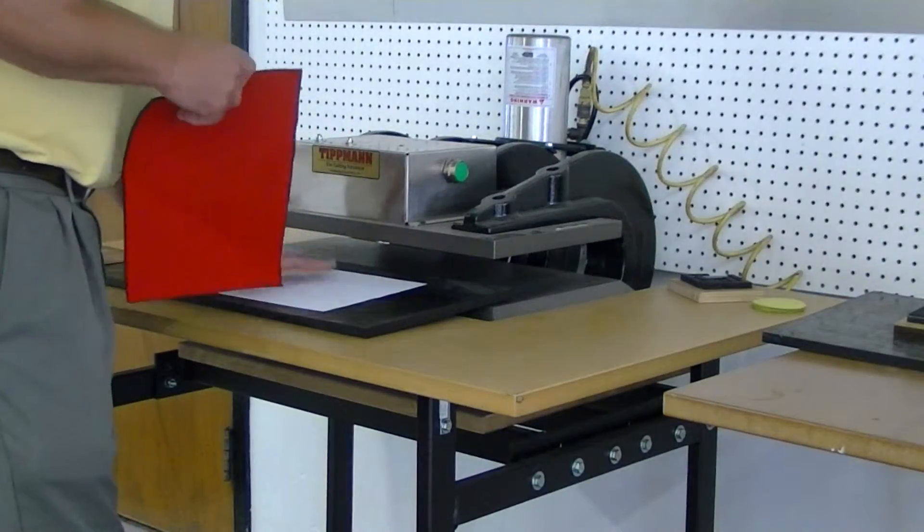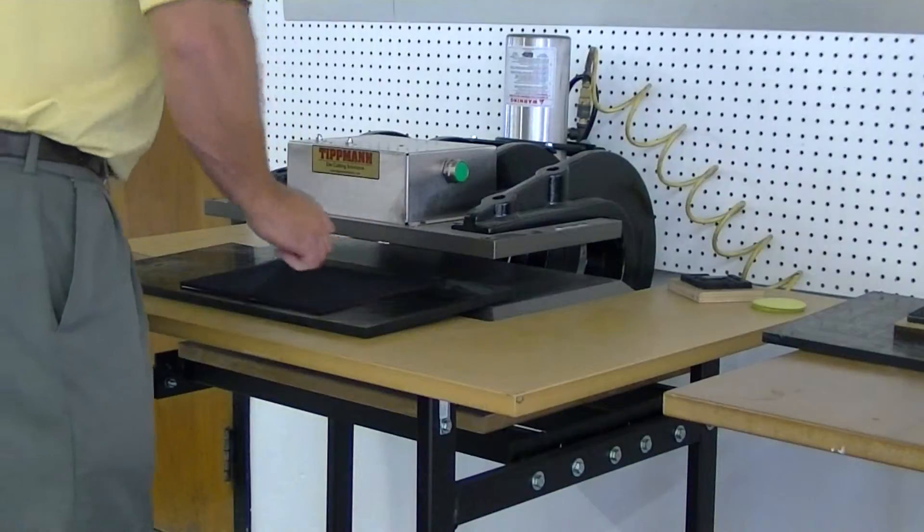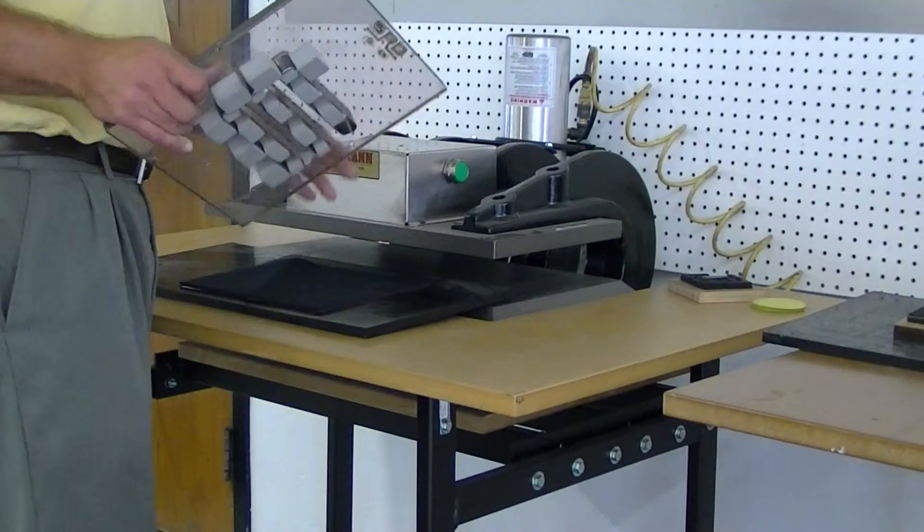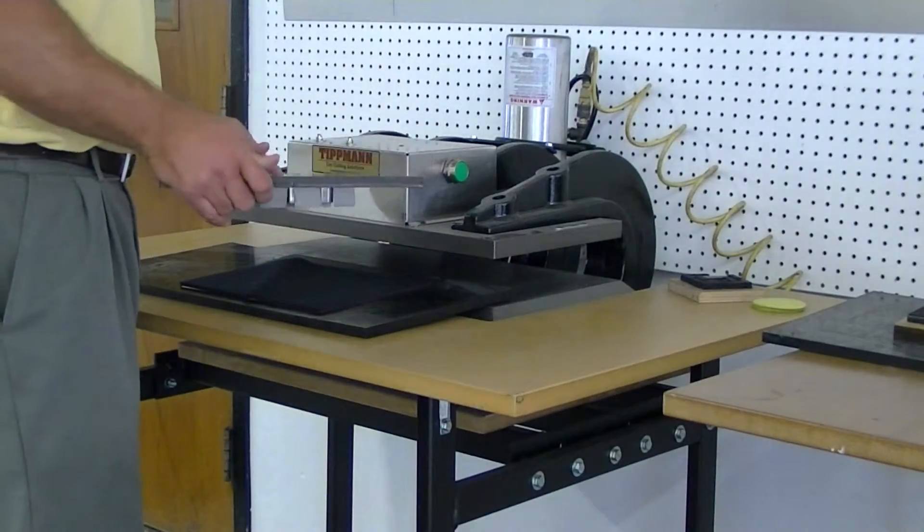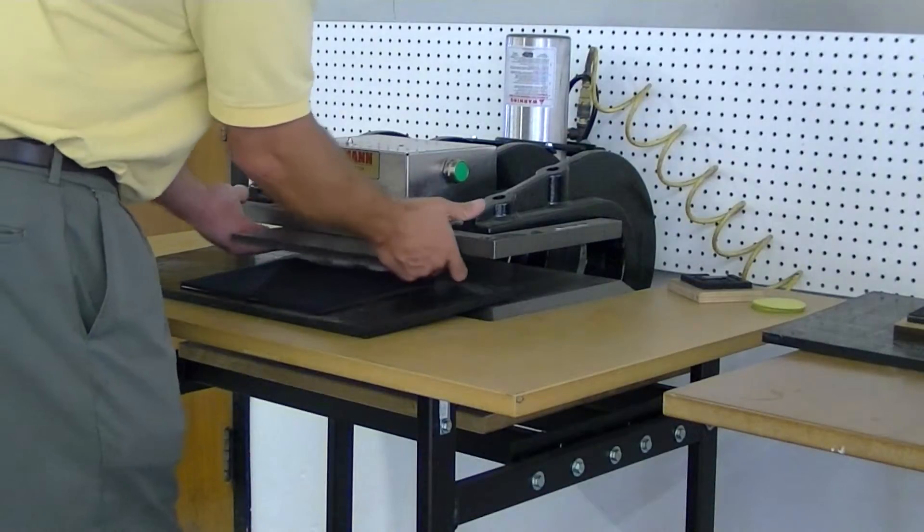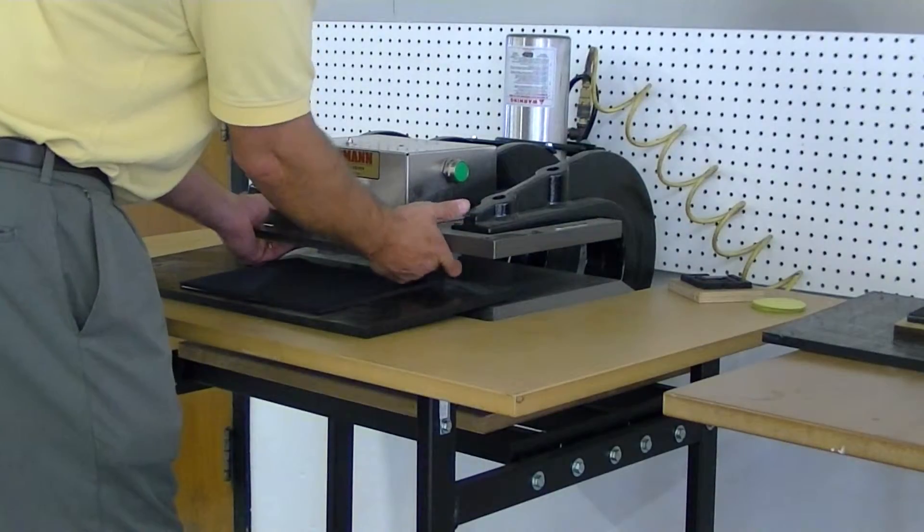So you put the piece of paper down, put the material on top of it. Now in your case, using the 15-ton, we'll have a die that has a 12 by 24 cutting board there, which is mounted to the top of the top platen.